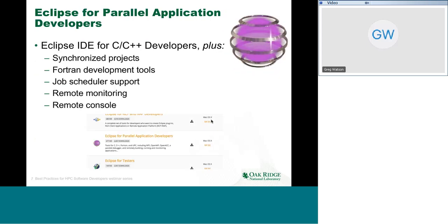The Parallel Application Developers package contains everything from the C++ package plus additional functionality: synchronized projects, Fortran support, and features for interacting with remote systems such as job scheduling, monitoring, and a remote console. That's why I recommend it for scientific application development.